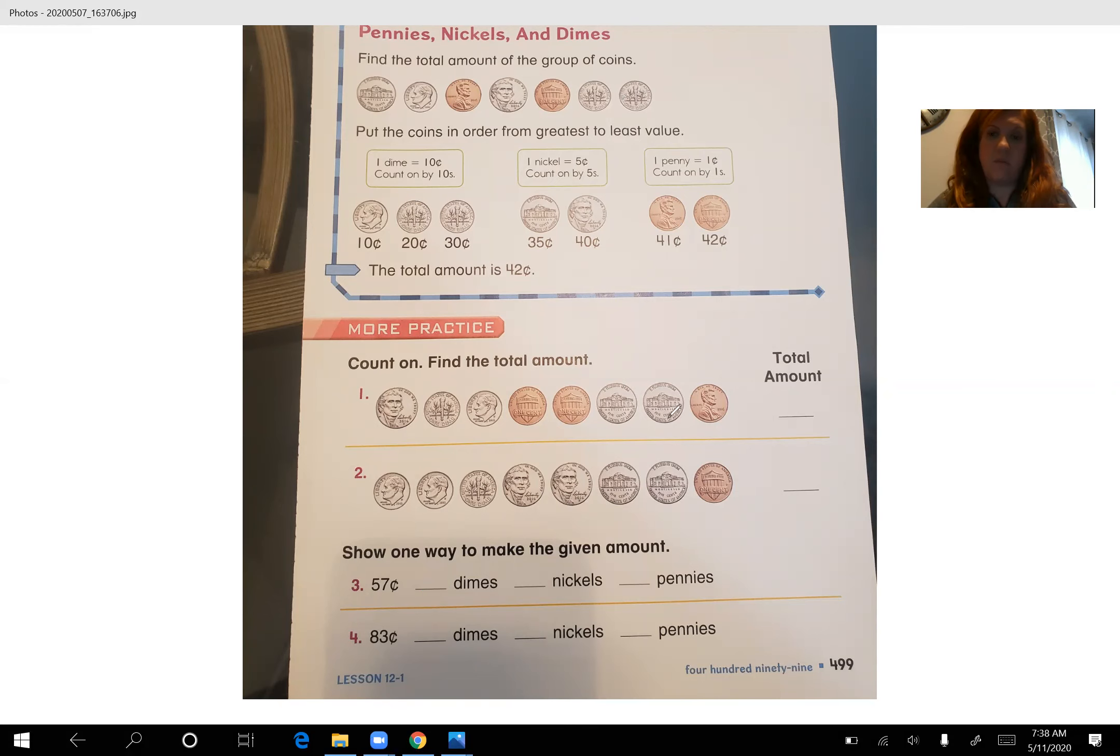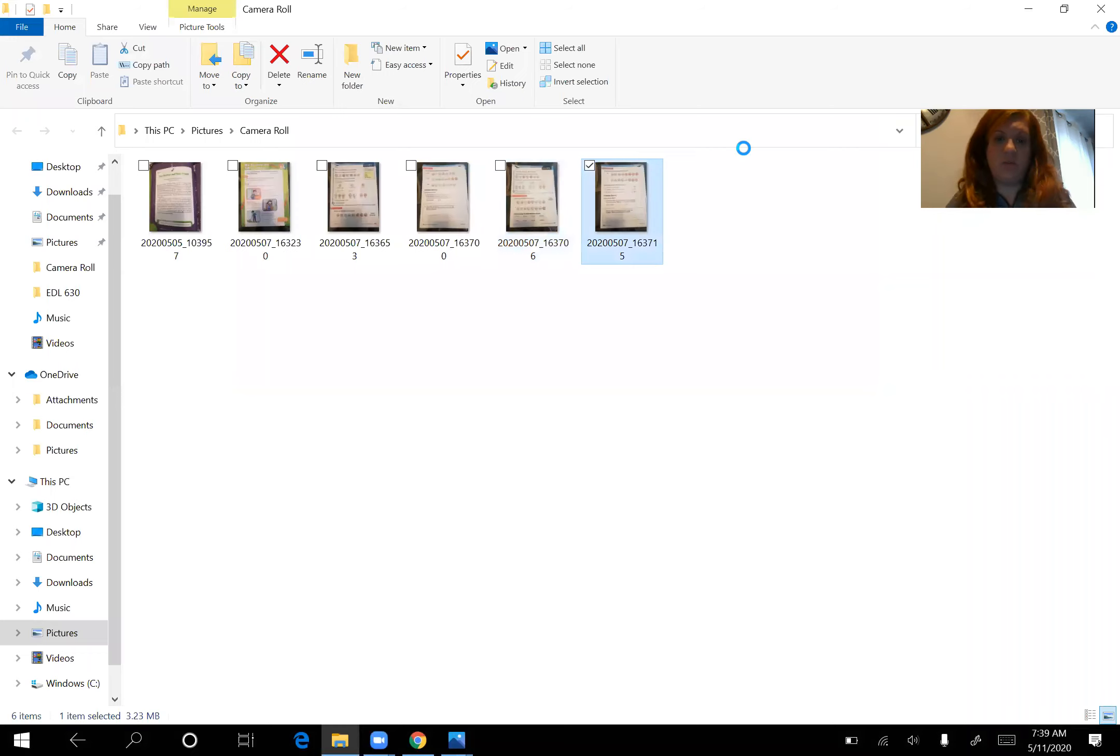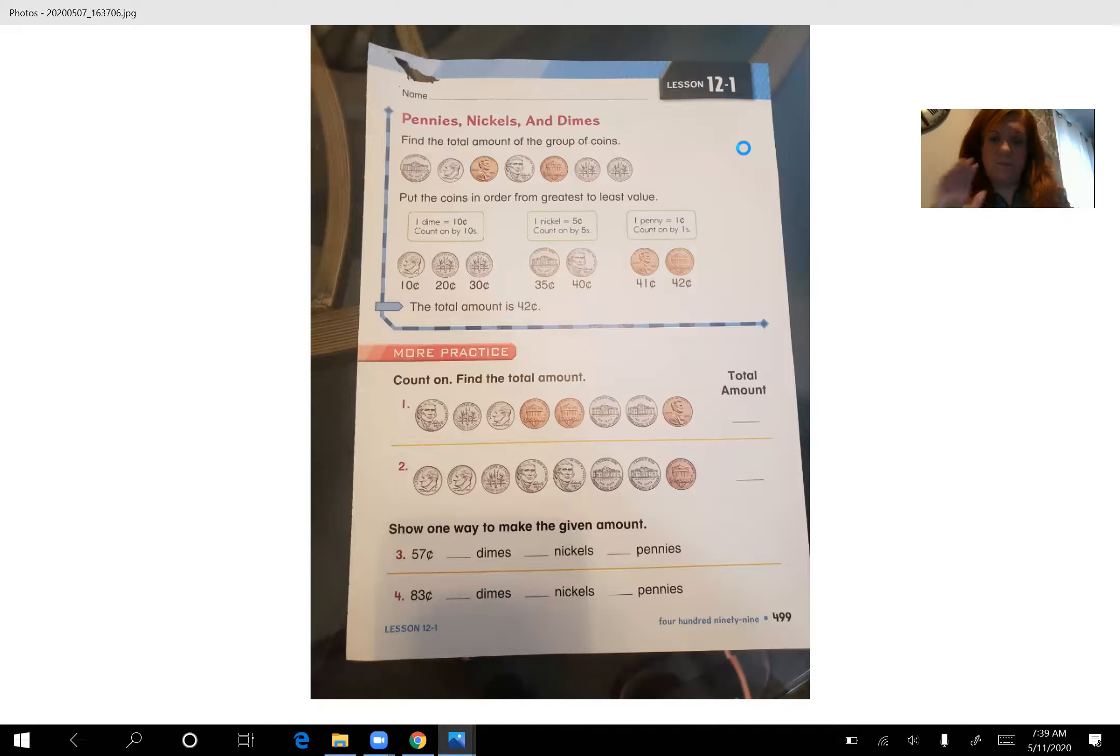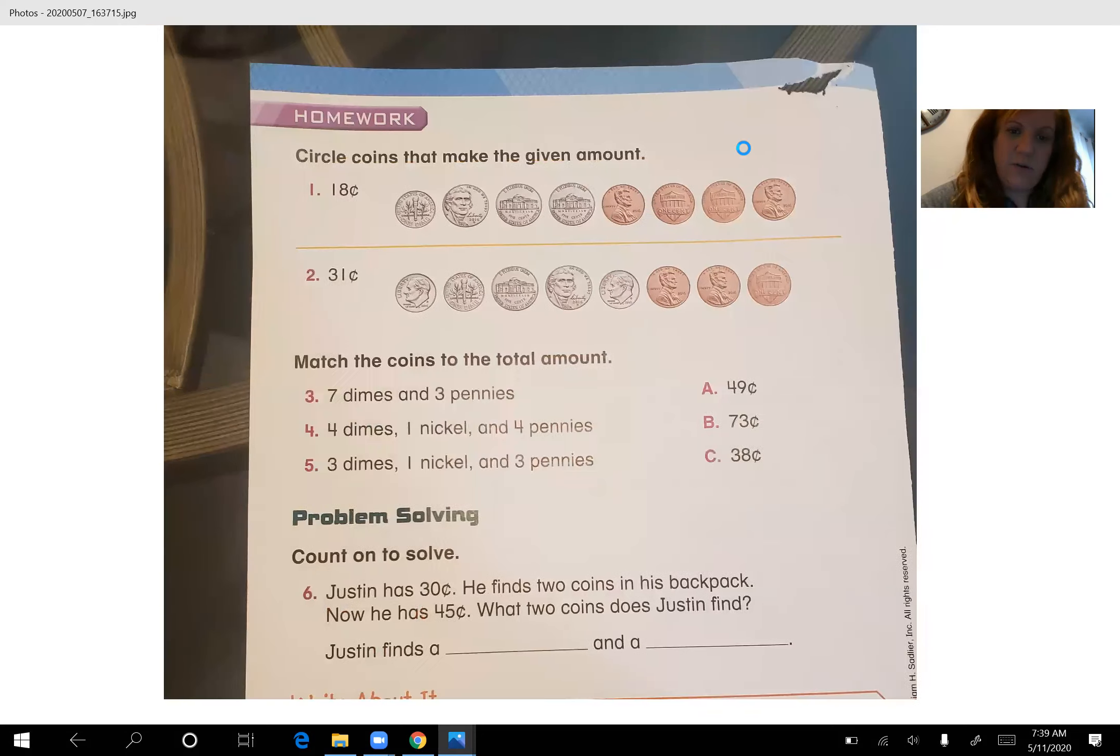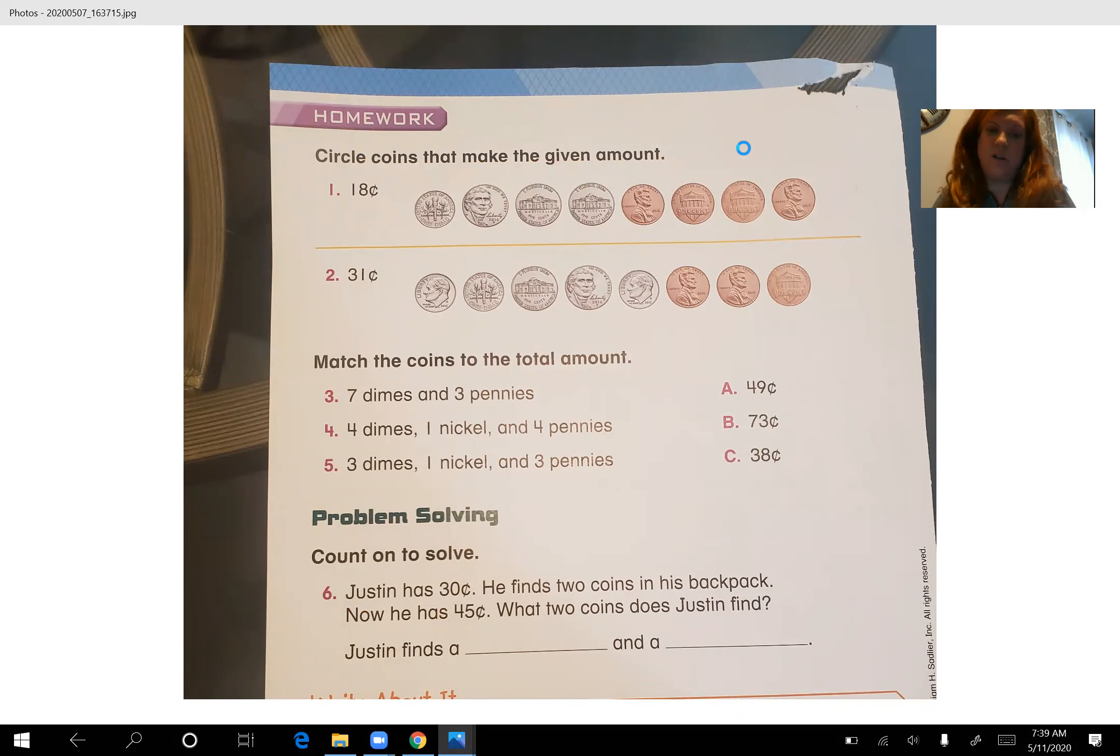And then I think we have one more page on the back. Let me pull that up. We're almost done. Circle the coins that make a given amount. Okay, for number one and two. So 18 cents, what coins would make 18 cents? 31 cents, what coins would make 31 cents? Match the coins to the total amount. All right, for number three, seven dimes and three pennies. What would that go to? A, B or C, you would draw a line. Number four, four dimes, one nickel and four pennies. You would draw a line to what that goes with. Number five, three dimes, one nickel and three pennies. You would draw a line to what that would go to.